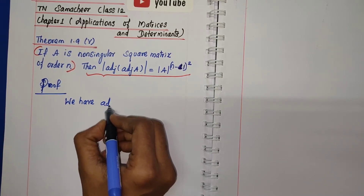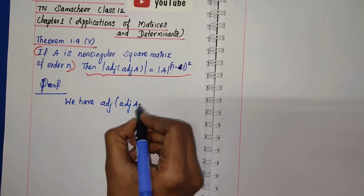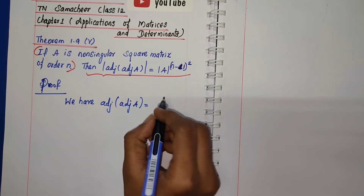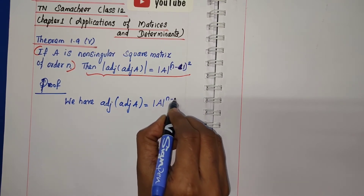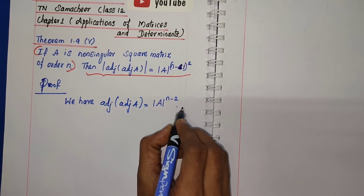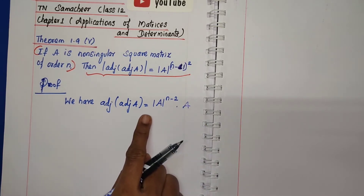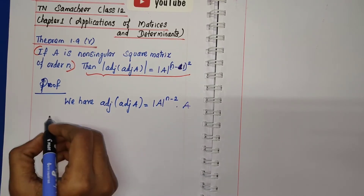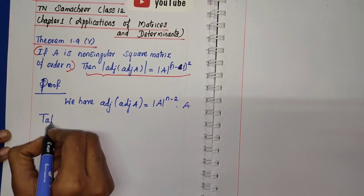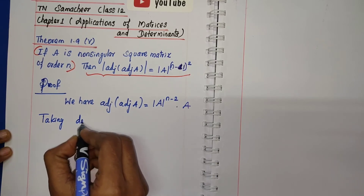We already know the result: adjoint of adjoint A is equal to determinant A power n-2 into A. Taking determinant on both sides, determinant of adjoint of adjoint A is equal to the full determinant of the right-hand side term.